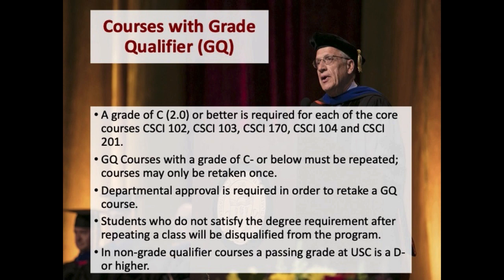These grade qualifier courses require a grade of C or higher to be considered passing. This means that if students receive a grade of C minus or lower, they must repeat these courses. Departmental approval is required in order to retake a grade qualifier course, and students will meet with their academic advisors if they end up having to retake one of these courses. Students who do not satisfy these degree requirements after repeating the course may be disqualified from the computer science program.